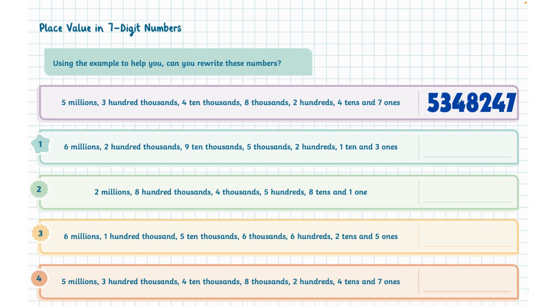Hi and welcome to element Z3. Place value in seven digit numbers. Using the example to help you, can you rewrite these numbers?